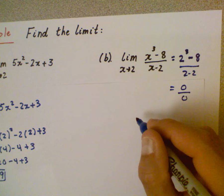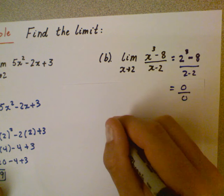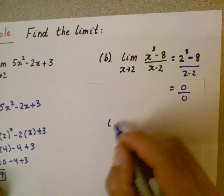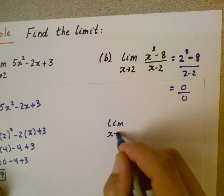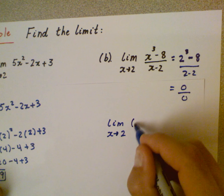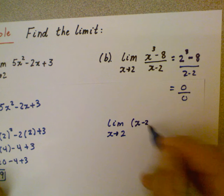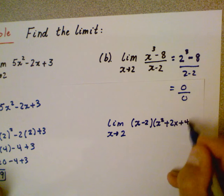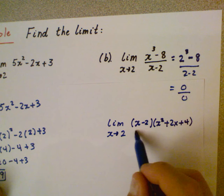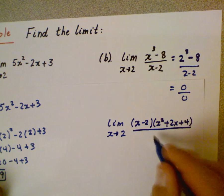We're going to start by factoring. The numerator is the difference of two cubes. So we're going to have the numerator as being (x - 2) times the quantity (x² + 2x + 4). So we have to know that difference of two cubes pattern. Then we have over x - 2.